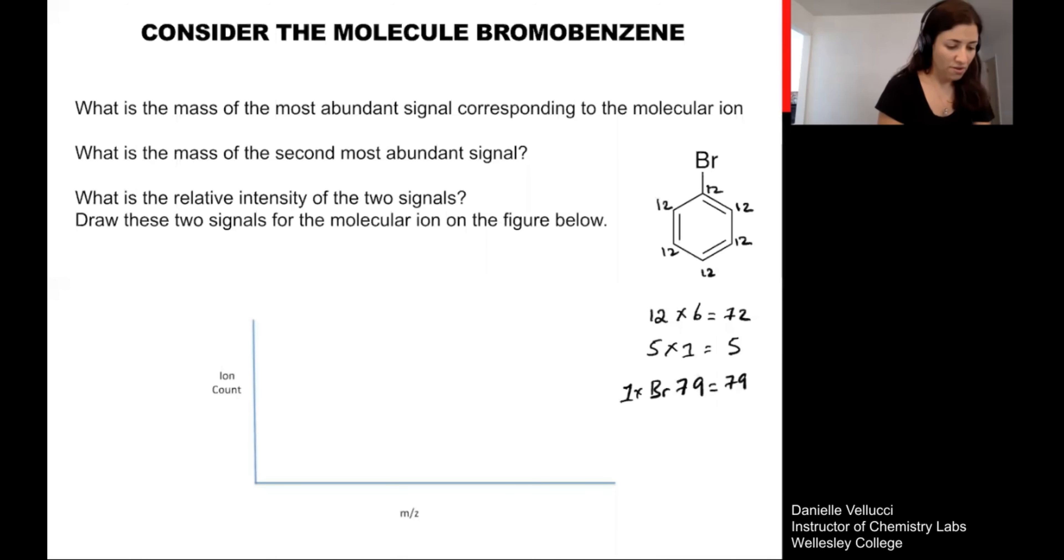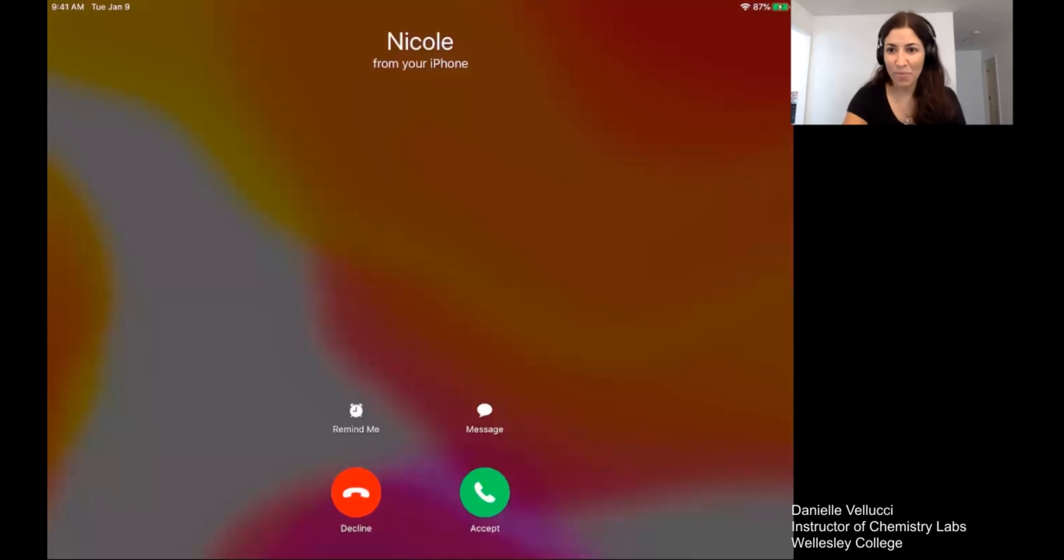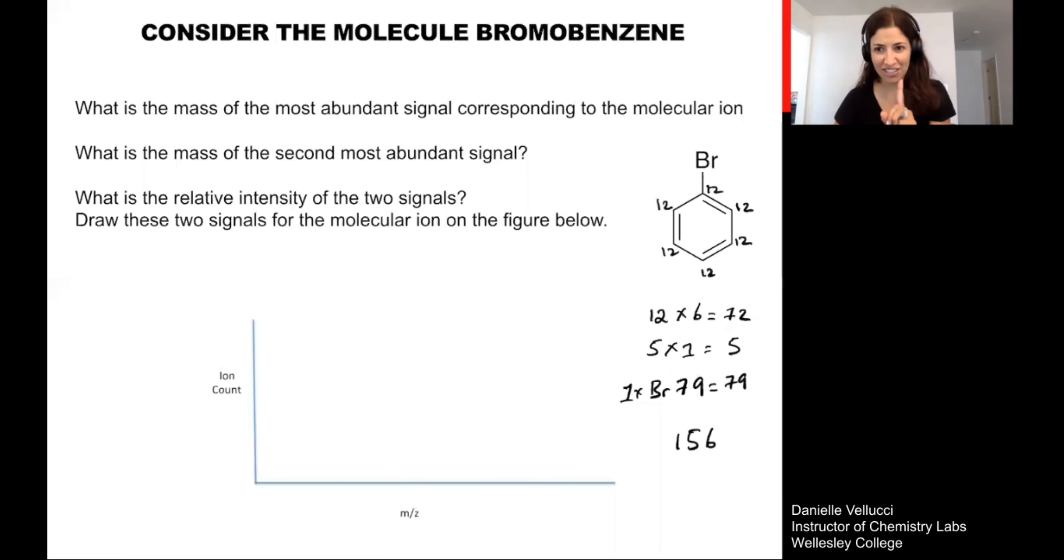And for bromine, if we look back at our table, there is a slightly greater abundance of Br79. And we have one of those bromines. So let me pull out my calculator because my math brain is not working this morning. And I should get a mass total of 156. And I place that on to my axis here. When I think about what other signals I might see as part of the signature for this molecule, I'm going to do the same I did before. And I'm going to consider the possibility of seeing some of the less abundant isotopes. Remember, when we looked at bromine, Br79 was about 51% of what you would find in a sample of a molecule containing bromine. But 49% of the bromine atoms are likely to be Br81.